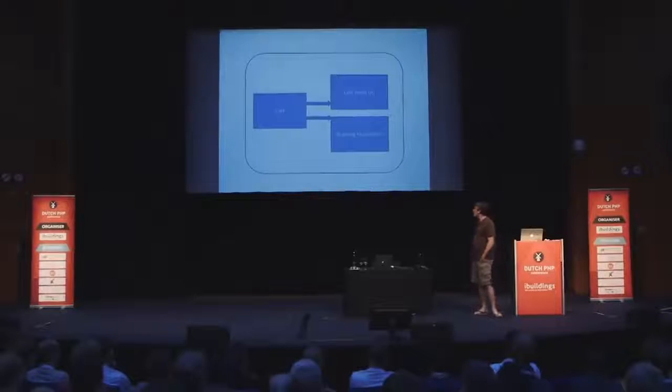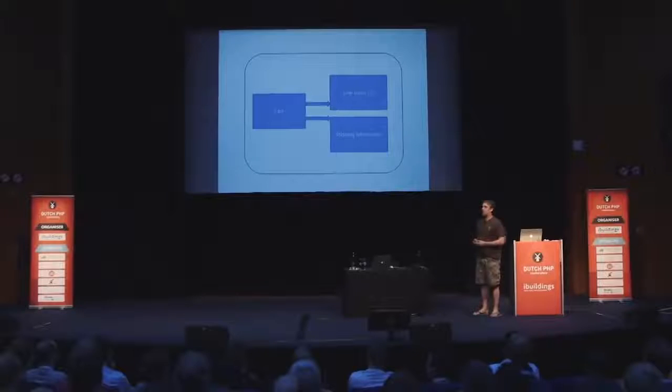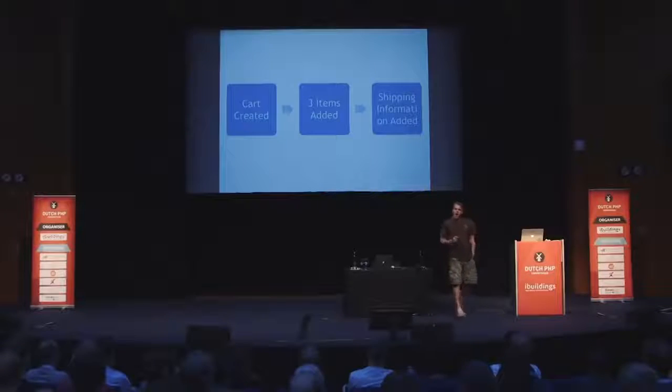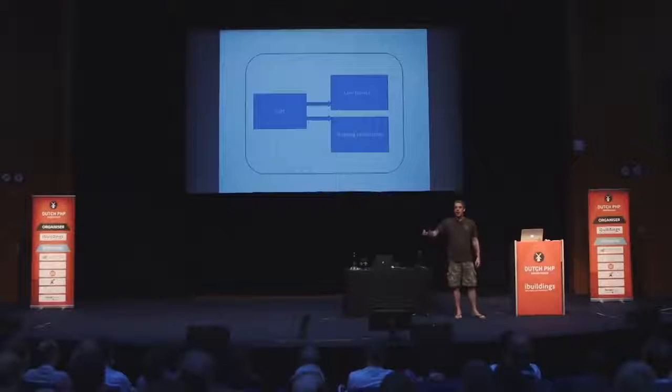Let's take a look at this quintessential piece of state. Here we have a cart with N line items and some shipping information associated with it — that's the shape of the information. But another way of dealing with this is we could actually store events: cart created, three items added, and shipping information added. At any given point in time I can replay these five events and build you that state. I could take my five events, play them back in memory, and hand you back a piece of state. But what we store are the events.